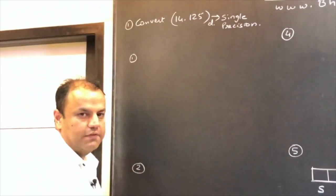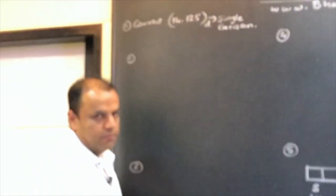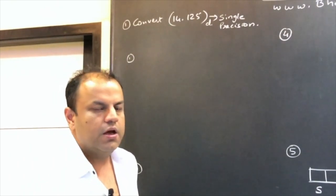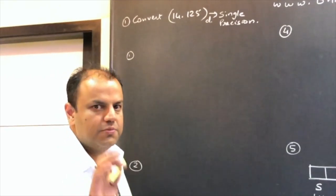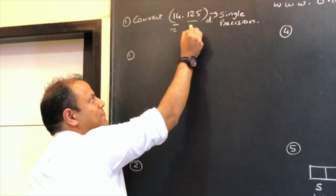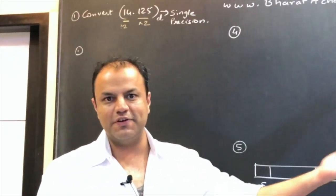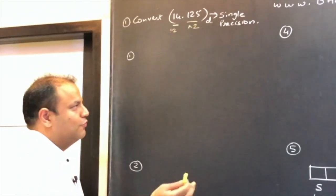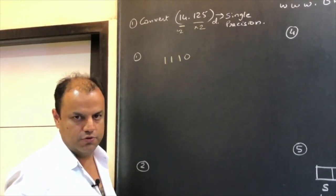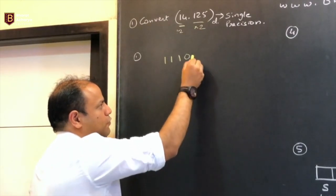First step: whatever number they give you, convert it into binary. When they give you a decimal fractional number, you cannot convert it in one step — you've got to do it in two parts. The integer part is done by the usual divide-by-two method. So 14 in binary: 8, 4, 2, 1 — 14 is 8 plus 4 plus 2, no 1. So this is 1110. You know how to do this — just draw a table using the divide-by-two method.